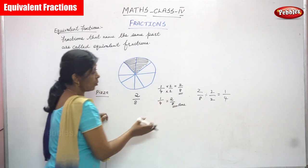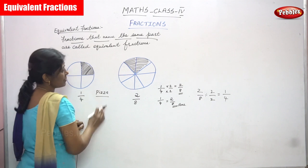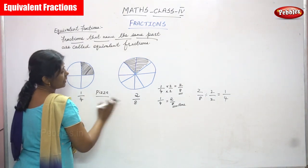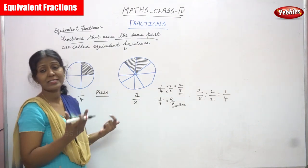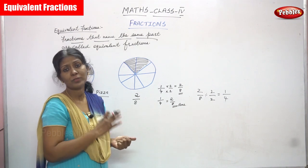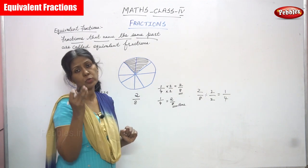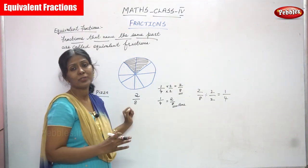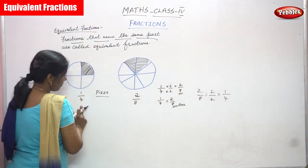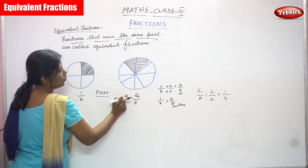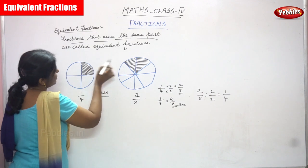It is an equivalent fraction — fractions that name the same part. One by four and two by eight are the same part. If you look at the fractions they appear different, but the value of both fractions is similar. The value of one by four is equal to two by eight. Both are the same part.